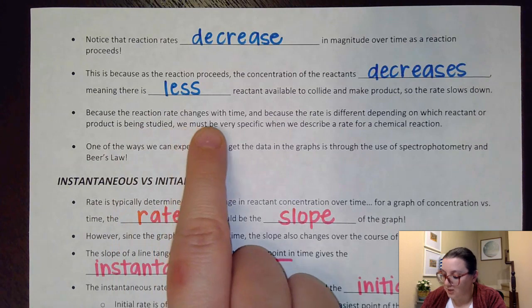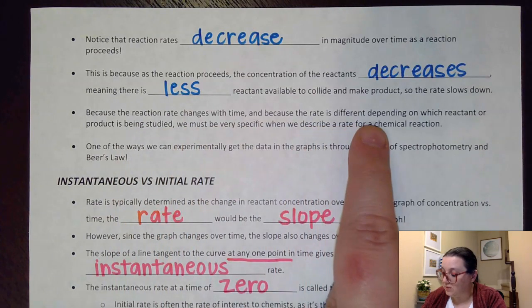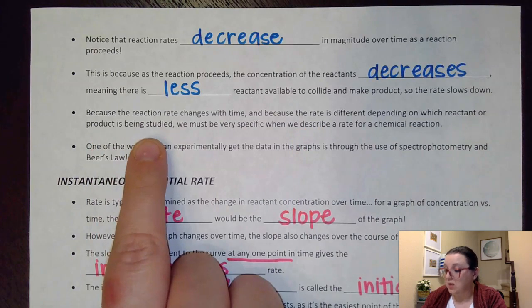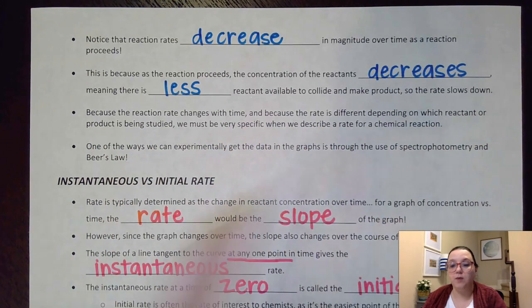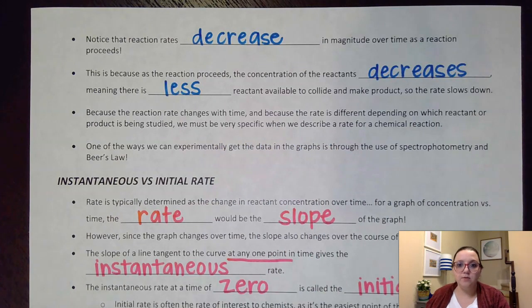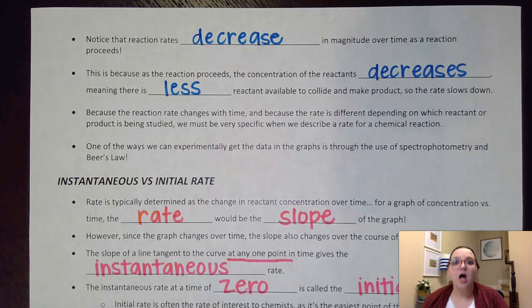Now, it says here because the reaction rate changes with time and because the rate is different depending on which reactant or product is being studied, we must be very specific when we describe a rate for a chemical reaction. On the example that we saw on the previous page, on that graph, they only had one reactant and one product. So it was kind of obvious what was going on. But let's say you had a reaction where you had two reactants. Both reactants could have a different rate of disappearance to them depending on the stoichiometry of the overall reaction. So whenever we clarify who has what rate, we always want to state, hey, reactant A has this rate, reactant B has this rate, reactant C has this rate. We want to be very specific on what that rate is for.